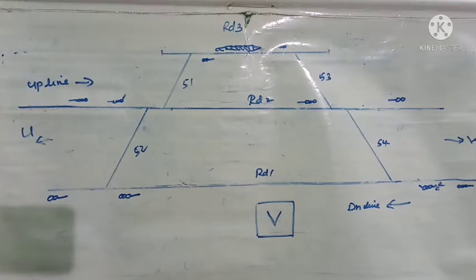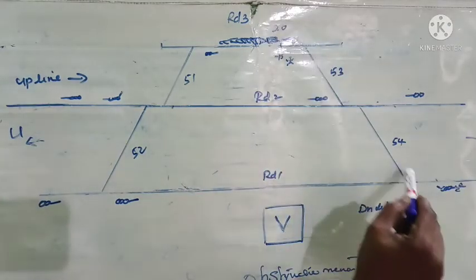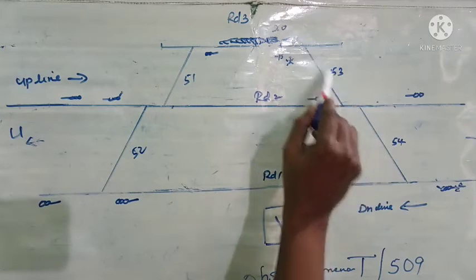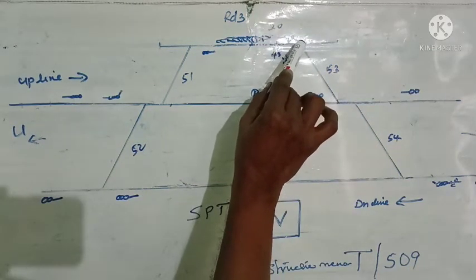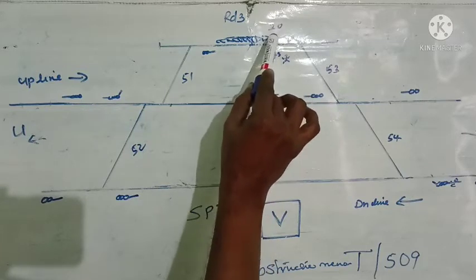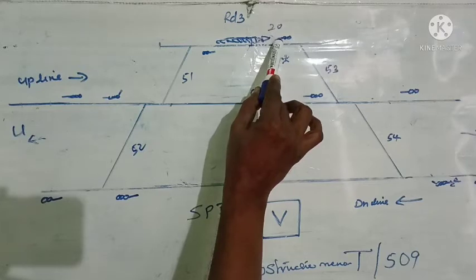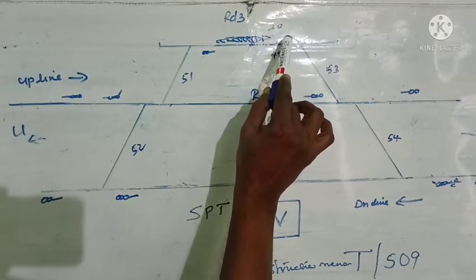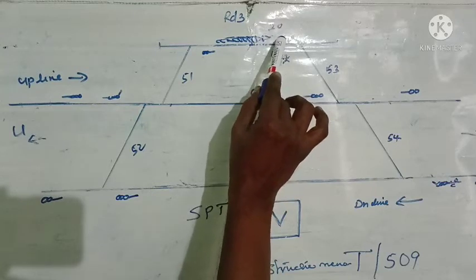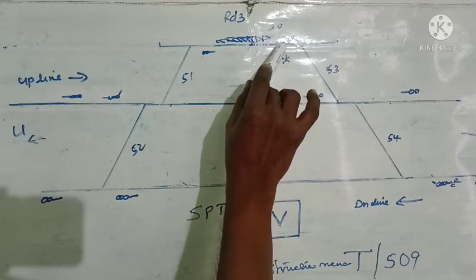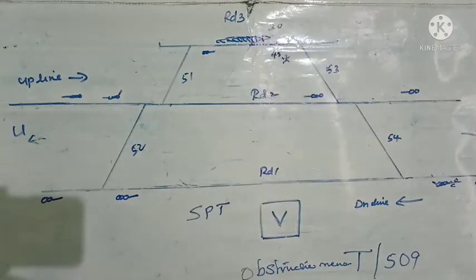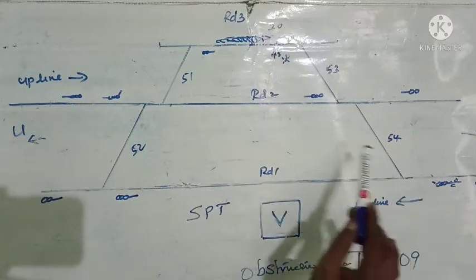What are the conditions we must ensure before clearing the calling-on signal? Clearing the calling-on signal ensures setting and locking of all points — that is points 54 and 53 in reverse condition. A traffic stop should be posted at the point leading to this reception line, that is road 3, to show hand signal. Also, another stop should be posted a minimum of 45 meters away from the obstruction with a hand danger signal shown towards the engine coming to road 3. If it is day, the red flag should be shown; if it is night, the red light of the hand signal lamp. These two conditions are to be satisfied before clearing the calling-on signal.